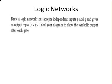So first off let's look at our question here. It's a bit blurry there. Draw a logic network that accepts independent inputs P and Q and gives as output NOT P AND (P OR Q). So first off let's actually consider the symbols here that we are looking at.